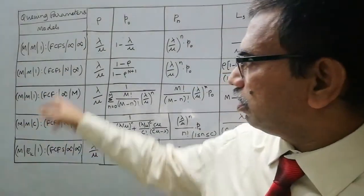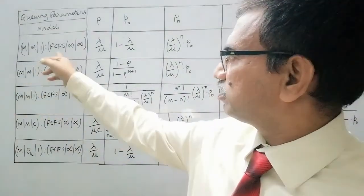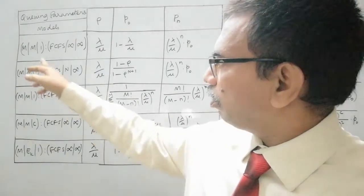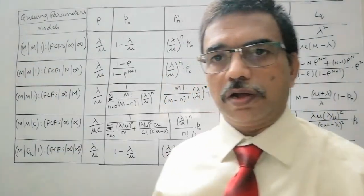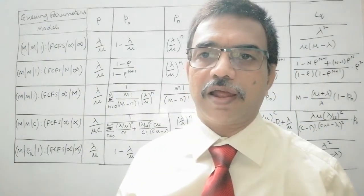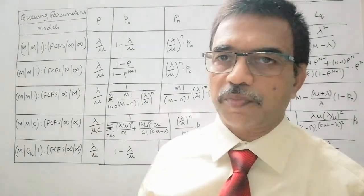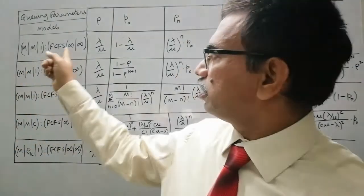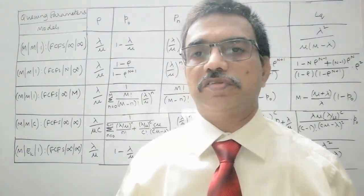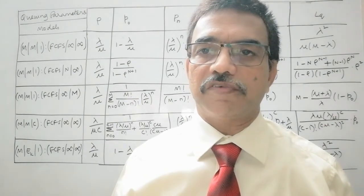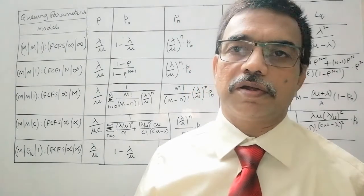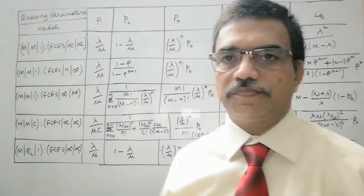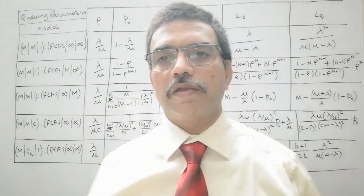Here we have important queuing models. The first one is the single server queuing model with Markovian, that means with inter-arrival and service times following exponential distribution in single server and queue discipline being first come first serve. And there is no limitation on the queue size or the capacity of the serving facility. And there is no limit on the arriving customers, that is calling population.